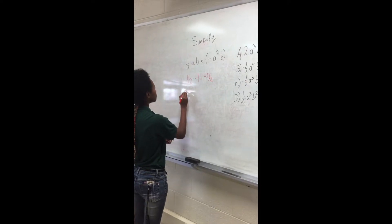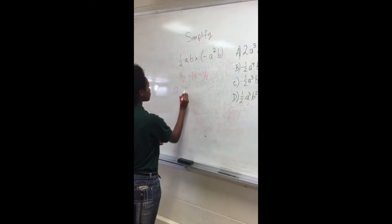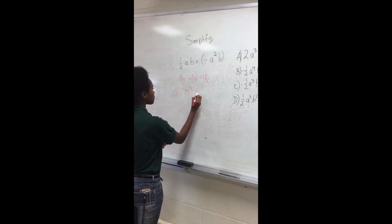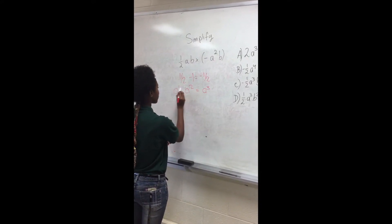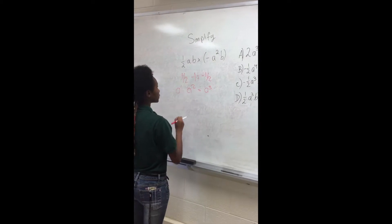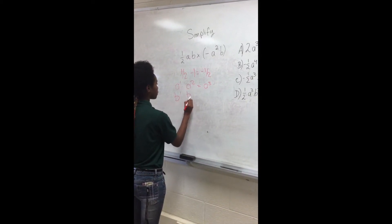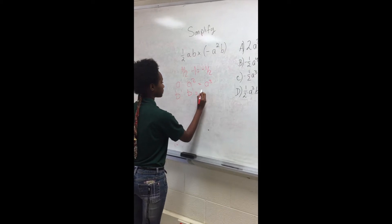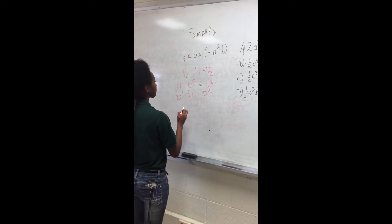Then you would multiply all variables, which would give you a to the third. Remember to add exponents when there is the same base. The same goes for the b exponent, giving you b squared.